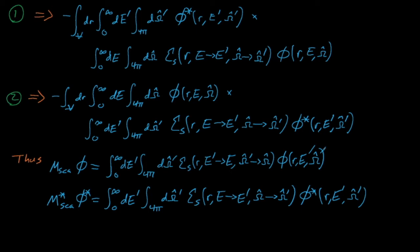Previously, our scattering source represented the number of neutrons that scattered into this phase space from all other energies and directions. Now the opposite is true. When a neutron enters a scattering collision, the importance is equal to the importance generated by the emerging particle's energy and direction. This makes sense, as the importance of a scatter should depend on what the neutron does after the scattering collision happens. For example, a scatter with uranium-238 is mostly irrelevant because it doesn't significantly change a neutron's energy, whereas a scatter with hydrogen is very important because it gives the neutron a significant chance to thermalize.